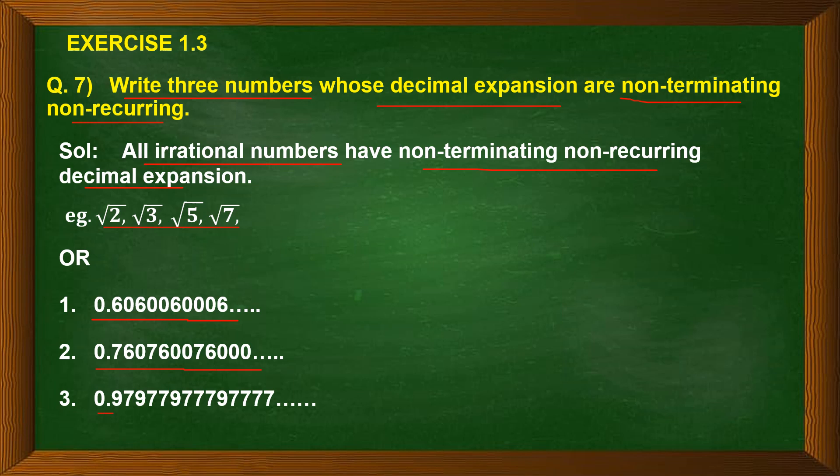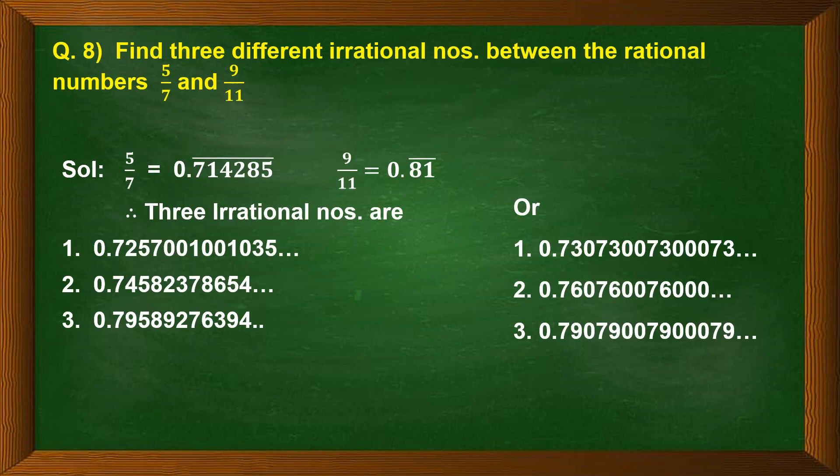0.979779777 and so on. Such numbers are called irrational numbers and their decimal expansion will be non-terminating and non-recurring. Question 8 is: Find three different irrational numbers between the rational numbers 5/7 and 9/11.